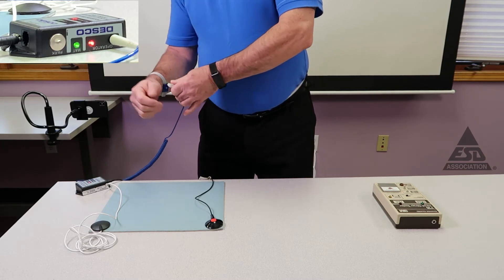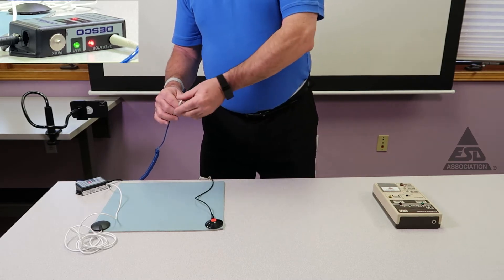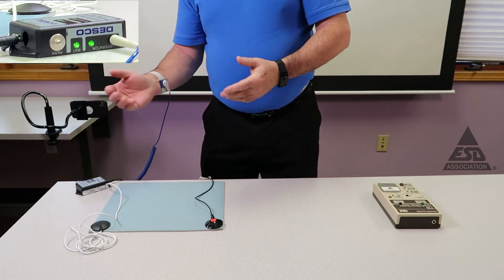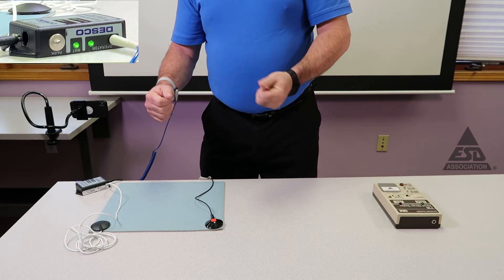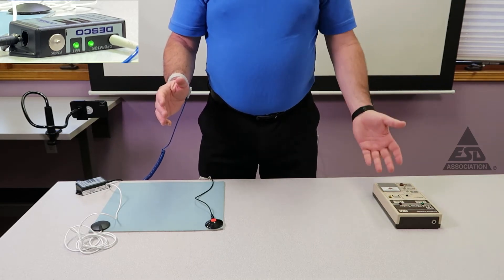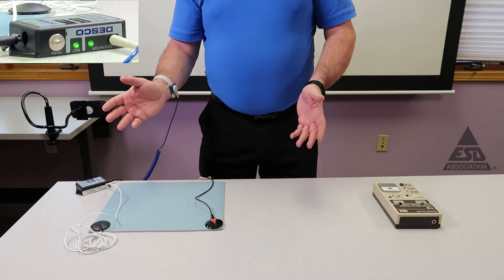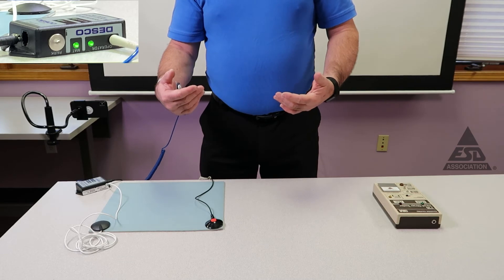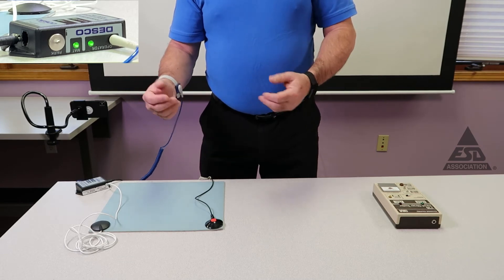If I disconnect, it now alarms. You can see when I disconnected, it did turn red and also alarmed. This is a different type of continuous monitor. As far as effectiveness, using either the daily wear or either continuous monitoring systems or any other continuous monitoring systems, the effectiveness of a wrist strap is the same, and we'll demonstrate that in a second.